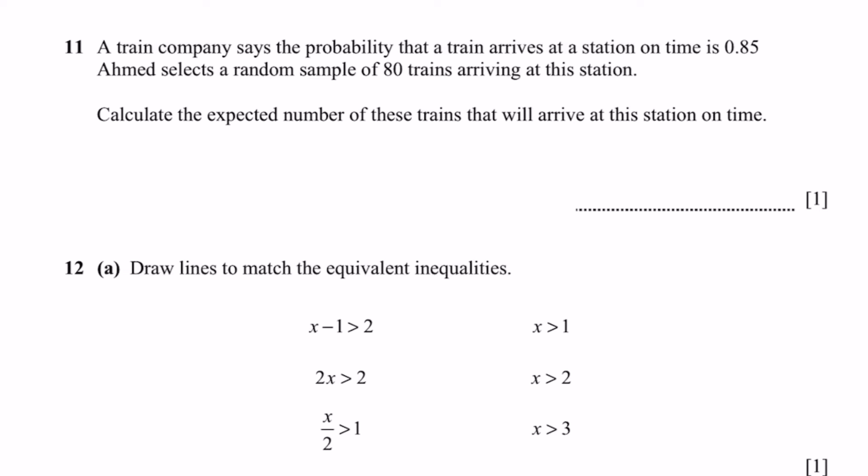Question 11. A train company says the probability that a train arrives at a station on time is 0.85. Ahmed selects a random sample of 80 trains arriving at the station. Calculate the expected number of these trains that arrive at the station on time. If there's 80 trains and the probability is 0.85, the expected number is simply 80 times 0.85, which equals 68 trains.